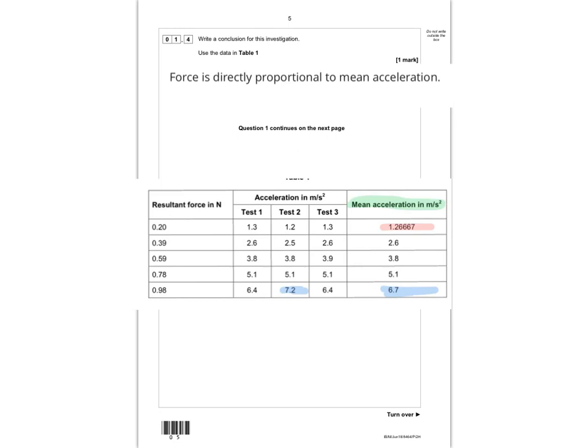Using F = ma, you would expect force to be directly proportional to acceleration — that will get you the mark. For example, as force doubles from 0.2 to 0.4 N, mean acceleration also doubles from 1.3 to 2.6. Other accepted answers include stating a positive correlation between force and acceleration, or that a larger resultant force creates greater acceleration. Using mass/weight of the holder for force was also allowed.